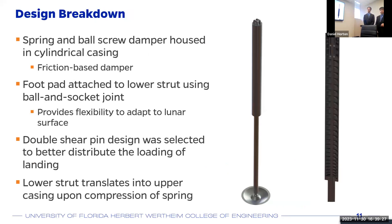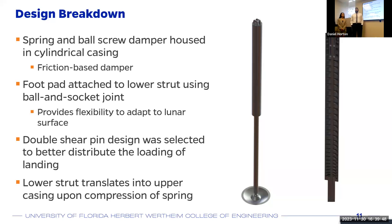The core of our design consists of a spring and extreme multi-damper that dissipates energy using friction. They are placed in a cylindrical casing that forms the leg. The foot pad attaches to the leg using a ball and socket joint, which allows for rotational movement to make it easier to land on uneven surfaces. A double shear pin design was used for the pin joint because it better distributes the load upon landing. The lower strut translates into the upper casing during compression of the spring, and that is how the energy gets dissipated when transferred to the damper.